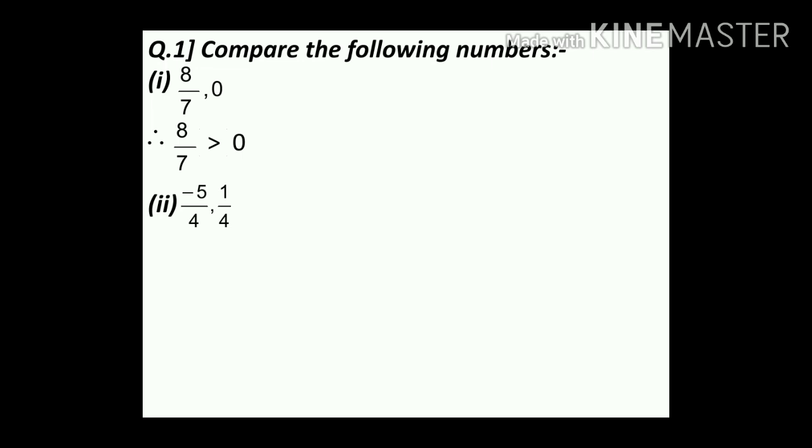Second one: minus 5 upon 4 comma 1 upon 4. Here children, one number is negative and one is positive. Positive numbers are always greater than negative numbers, so minus 5 upon 4 is smaller than 1 upon 4. Therefore, minus 5 upon 4 is less than 1 upon 4.